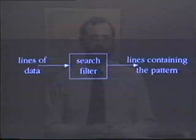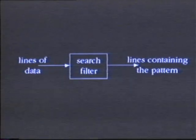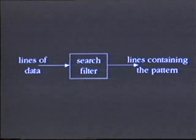The UNIX system treats text as simply a stream of characters. Filters view their input as lines of text and then process these lines depending on which filter you're using. For example, a filter that searches for patterns in text removes those lines from its input that don't contain the pattern.